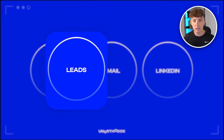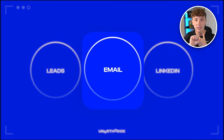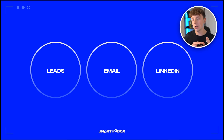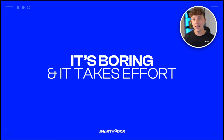For us, outreach has three different steps: leads that need to be generated, cold emails, and cold LinkedIn connections and messages. You could also be messaging people on Instagram or joining Facebook communities, but email and LinkedIn are the easiest to automate because there are tools that make it super simple.